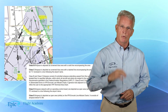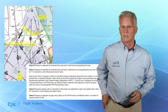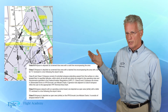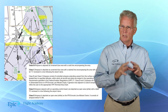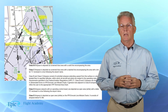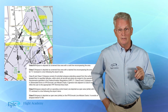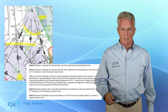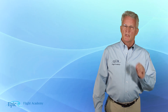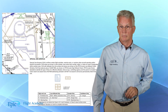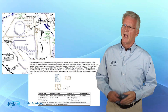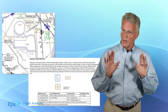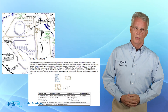Let's see how Bravo and Charlie airspace are depicted. Bravo is shown as a screened blue area with a solid line encompassing the area. Charlie is also shown as a screened blue area but with a dashed line and the letter C following the airport name. Delta airspace is depicted as an open white area with the letter D following the airport name. Special use airspace is also shown, looking similar to the sectional chart depiction.